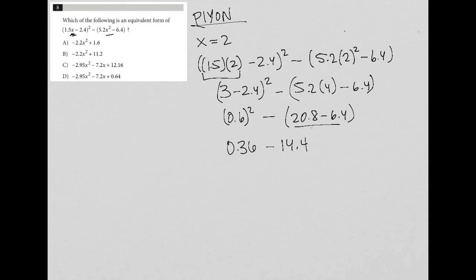And then 0.36 minus 14.4 is equal to negative 14.04. Okay, so I have that value. Now, what I do with that value is I go over to my answer choices. And I just plug x equals